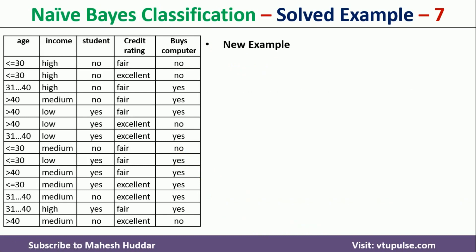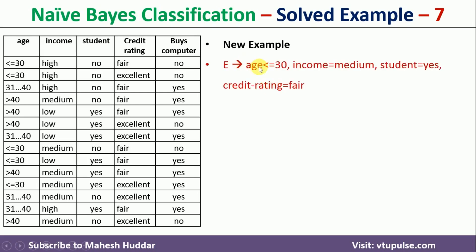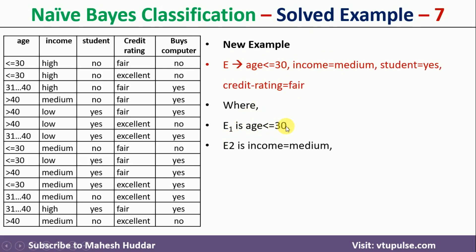We will denote this new example as E, which contains four attribute values: E1 is age ≤ 30, E2 is income = medium, E3 is student = yes, and E4 is credit rating = fair.